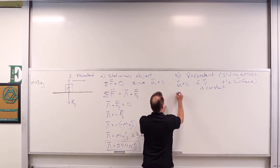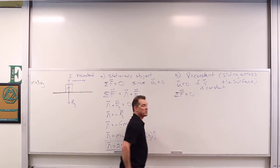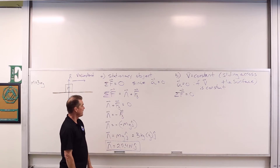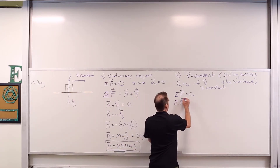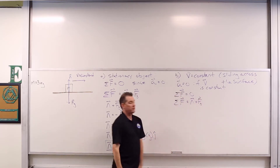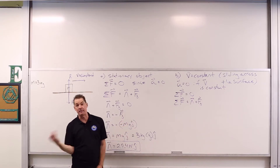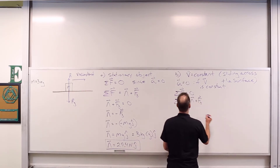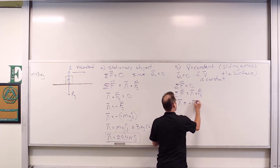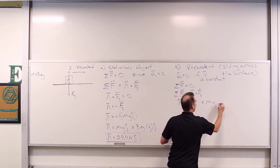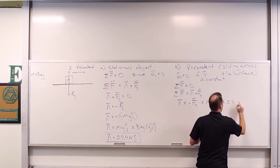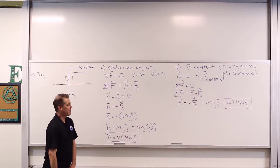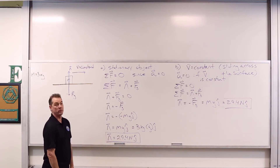The acceleration is still equal to zero, so the net force is still equal to zero. The net force is still just N hat plus F sub G hat. Maybe there is some other force, but it has to be canceled out because there is no overall acceleration of the object. We're just interested in what the normal force is — and we get the same result: 29.4 Newtons in the J hat direction.